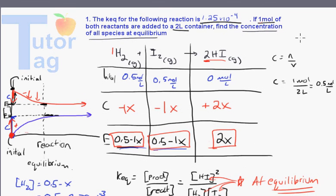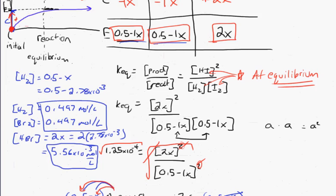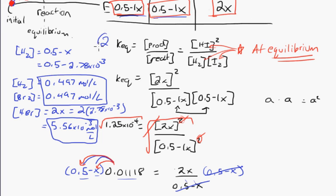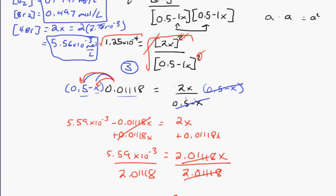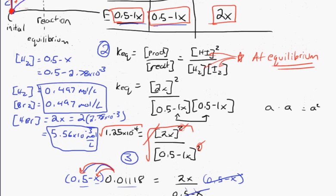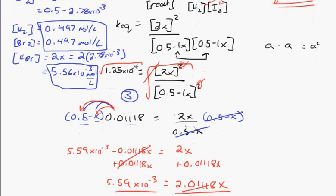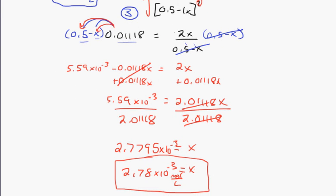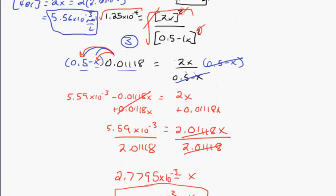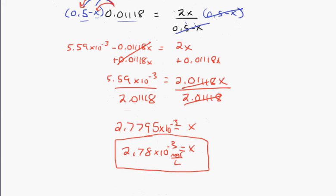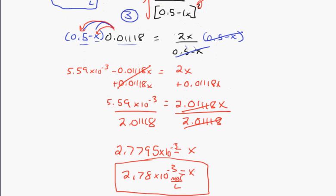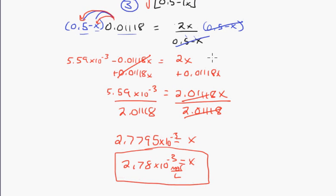Looking at the steps: first, set up the ICE table. Second, write out the equilibrium law or equilibrium expression. Third, substitute everything into the equilibrium expression and solve for the unknown variable X. Note that algebra is required here — rational expressions, binomials — so make sure you know how to solve using those math techniques.